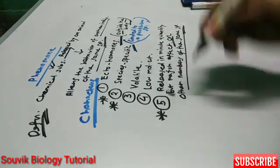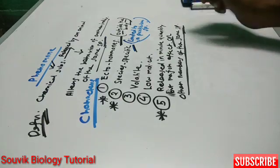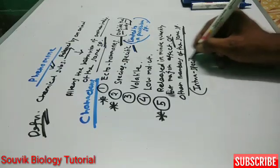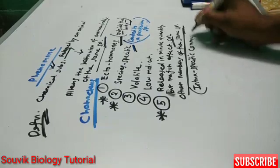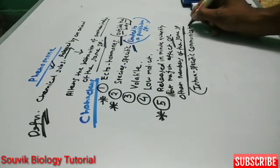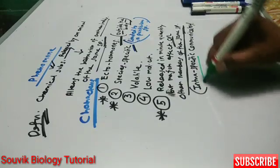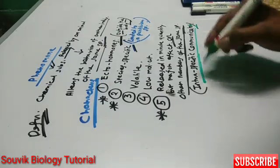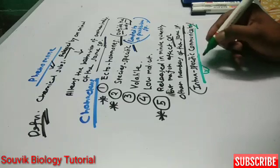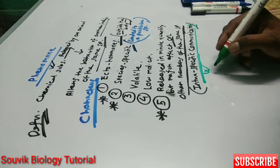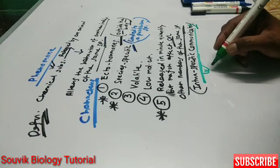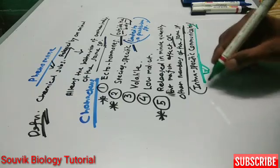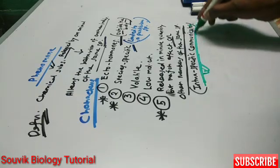As pheromones act on all members of the same species, they also act as an intraspecific communicator. This is very, very important. Why intraspecific? Because pheromones act on all the members of a particular species; they don't work on members of another species.